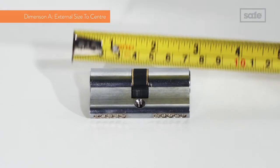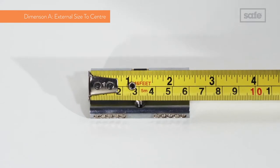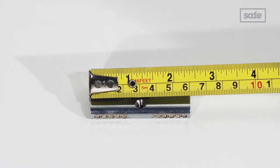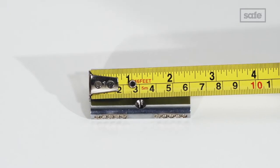First measure from the left edge to the screw hole in the centre. This is the external size to centre measurement. We call this dimension A and as you can see ours measures 30mm.